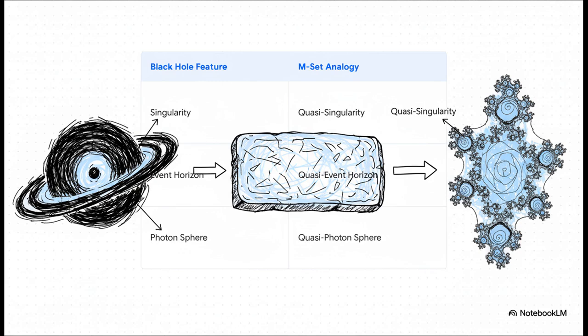The singularity becomes a quasi-singularity, the event horizon a quasi-event horizon, and the photon sphere, you guessed it, a quasi-photon sphere. We're basically creating a Rosetta Stone between cosmology and fractal geometry.